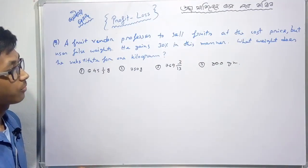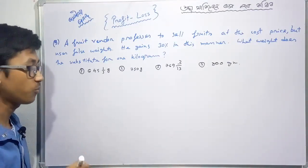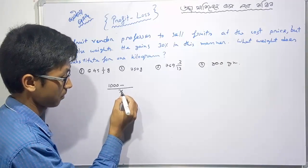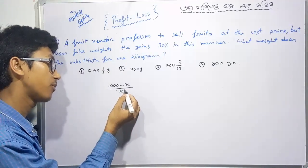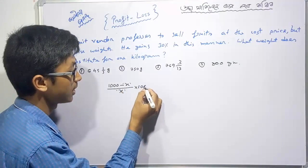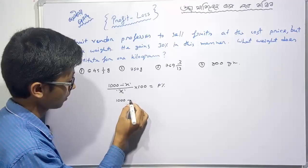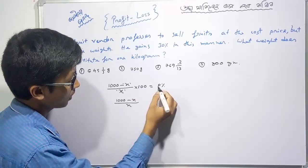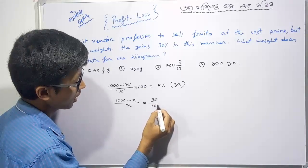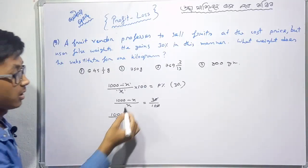Let's say he uses X grams. The profit is (1000 minus X) divided by X equals 30/100. This gives us the equation: 1000/X minus 1 equals 30/100, which simplifies to 1000/X equals 130/100.